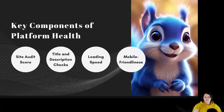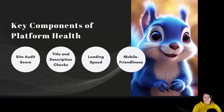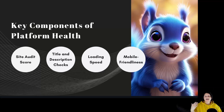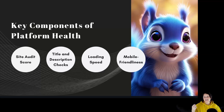Key components of Platform Health include the Site Audit Score, which evaluates overall site health aiming for a score above 70% and identifies technical issues affecting SEO performance. Title and description checks ensure all pages have unique and optimized titles and descriptions, improving click-through rates. Loading speed assesses how quickly pages load across devices, and mobile friendliness checks if your website is optimized for smartphones and tablets.